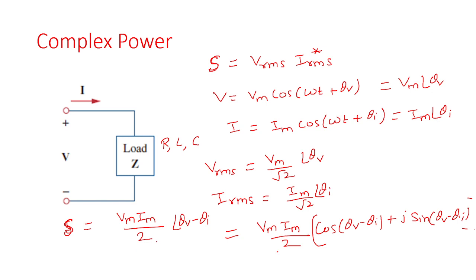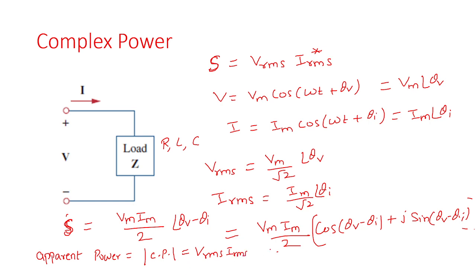After that we will talk about active power, real power, reactive power, and apparent power. Apparent power is denoted by the magnitude of the complex power, which is equal to VRMS·IRMS, or equivalently Vm·Im divided by 2.